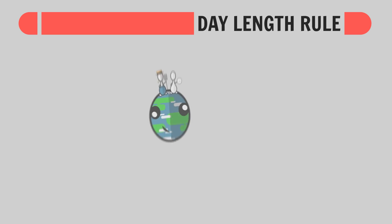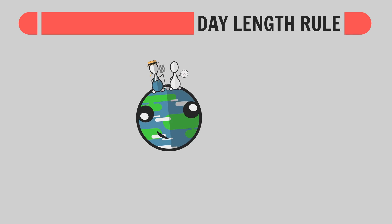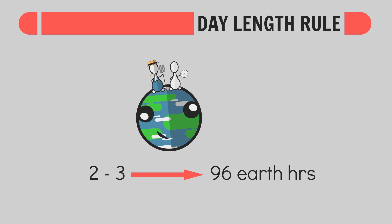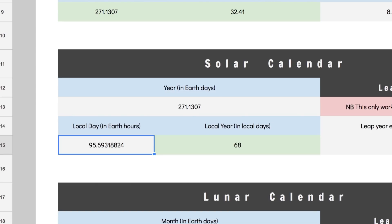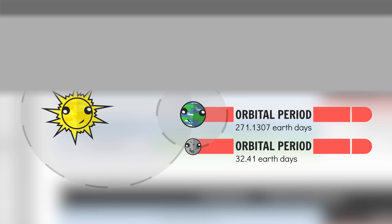That easy. There's only one rule here: for habitable Earth-like planets, the rotation rate needs to be between 2 to 3 and 96 Earth hours. So just by varying the length of a day, this planet's year could be anything from about 68 local days up to 3,250 local days — all without actually changing the planet's orbit.